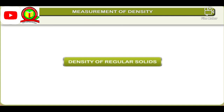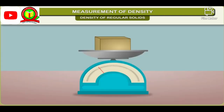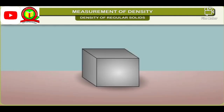Density of regular solids: The density of a solid can be measured by finding its mass and volume. The mass of a substance is obtained by weighing it with the help of a beam balance or physical balance. The volume V of a regular shaped object is calculated from its dimensions. Knowing the mass and volume of a substance, we can calculate its density using the formula ρ = M ÷ V.